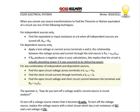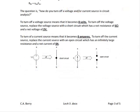To turn off an independent source: to turn off a voltage source, replace it with a short circuit (zero volts, zero resistance). To turn off a current source, replace it with an open circuit (zero amps, infinite resistance). Remember: zero volts → short circuit; zero amps → open circuit. There will be a lab where you practice this procedure.